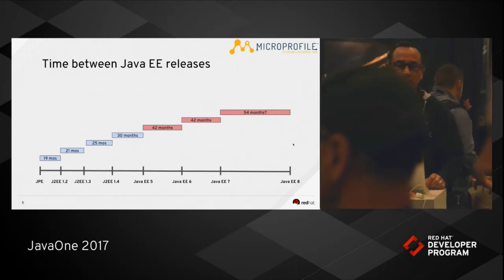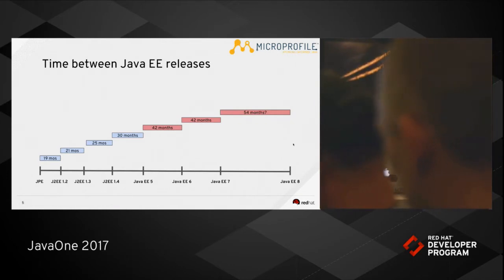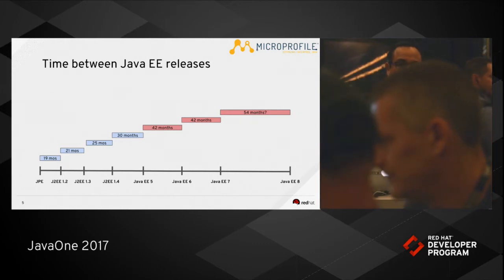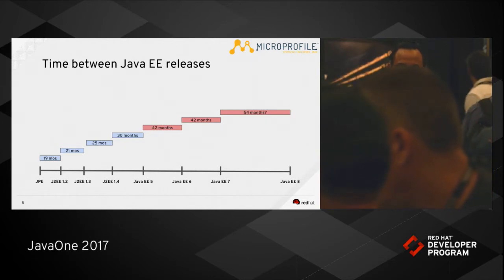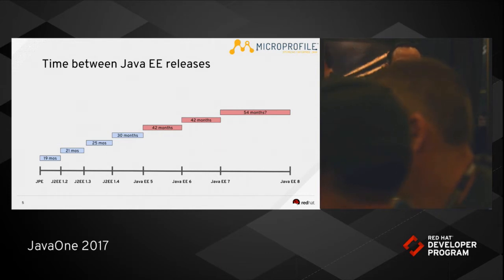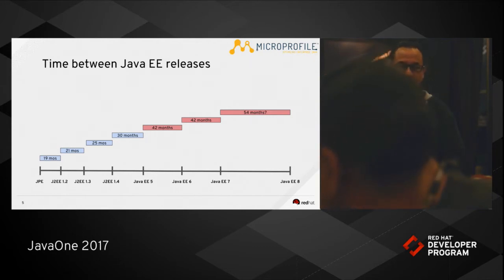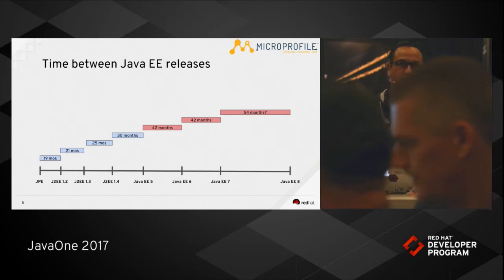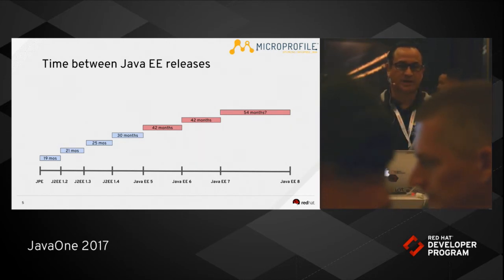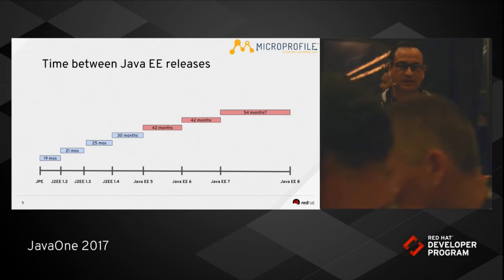This slide shows the release times — the time between releases — when it comes to Java EE historically. As you can see, the time between releases has been increasing since Java EE 5 came out. One of the reasons is that they're focused on standards, so they have to build consensus across the community. Coming up with standards is a slower process than, for example, an open source project that moves at a faster pace.